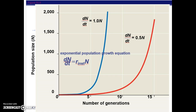This next graph shows two different populations with different growth rates. Both are J-shaped curves — both exponential — but one is much steeper than the other. Looking at the formula, the growth rate equals the instantaneous or max growth rate (here 1, and here 0.5) times the population size, which explains the different slopes of these curves.